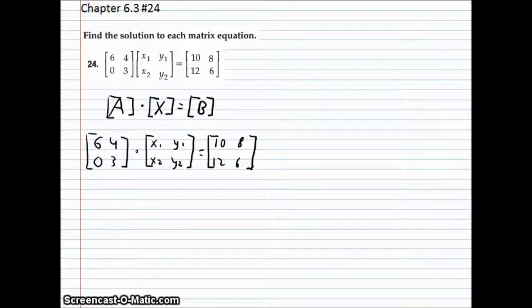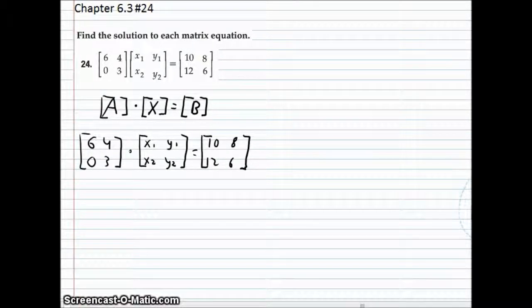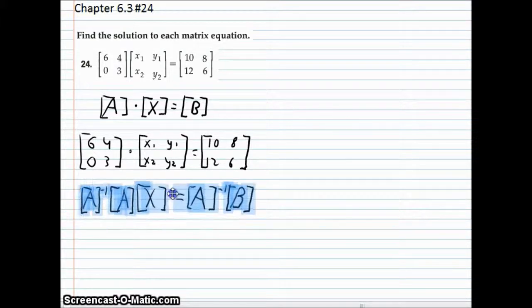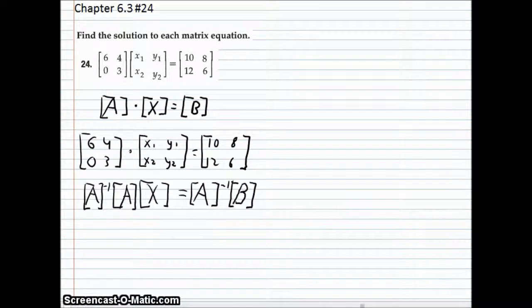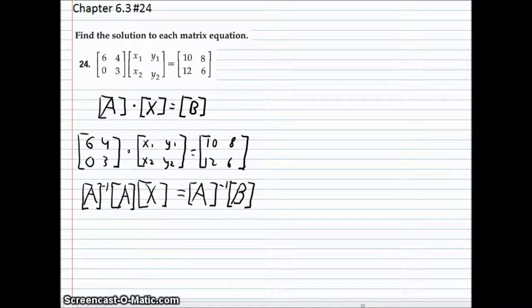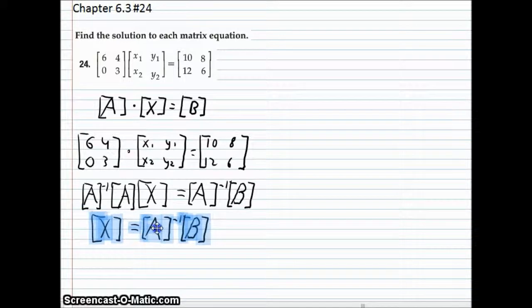So, now we need to isolate the X matrix. And you do this, basically, by multiplying each side of the matrix equation by the inverse of A. That will make this over here equal to 1. So, you're basically left with the equation X equals inverse A times matrix B.